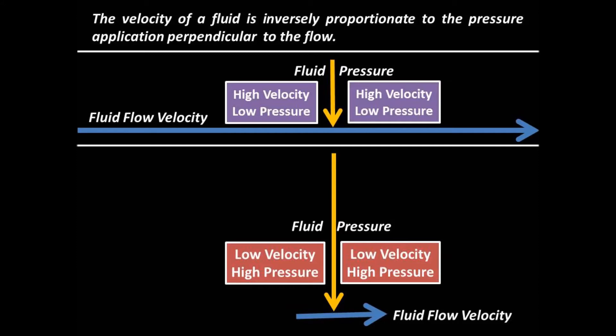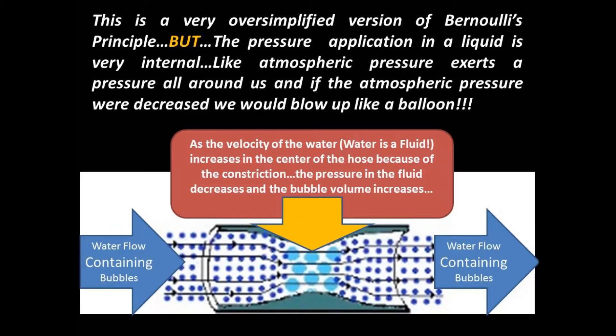Think of a garden hose hooked up to a spigot. If you turn the spigot on but the sprayer is not on, the pressure builds up in the hose. When you let the water flow, it reduces the pressure. Here, the middle of the hose is constricted and the flow of water becomes greater.